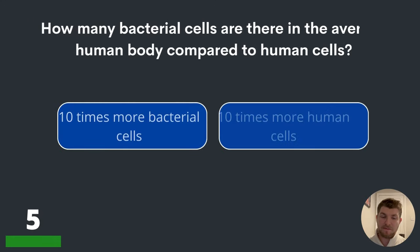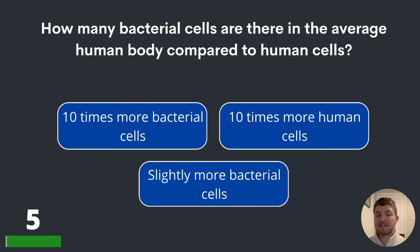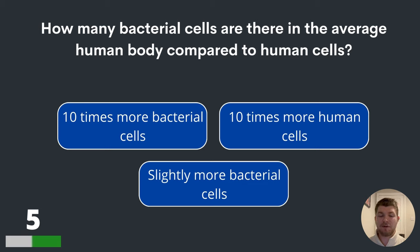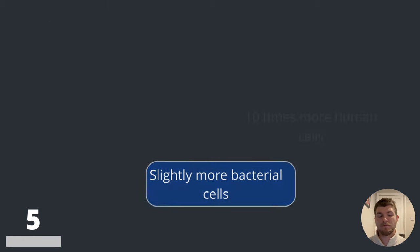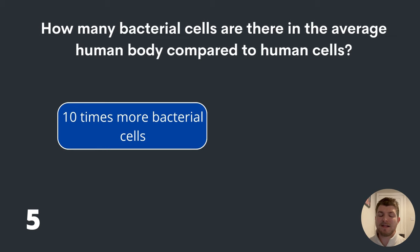Question five. How many bacterial cells are there in the average human body compared to human cells? 10 times more bacterial cells, 10 times more human cells, or slightly more bacterial cells? The answer is 10 times more bacterial cells.